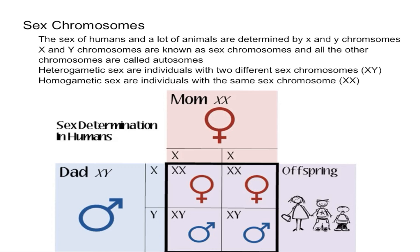Individuals that are homogametic sex are individuals with the same sex chromosome — two of the same, so two X's — and they are females.